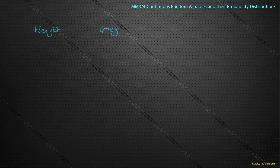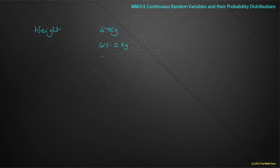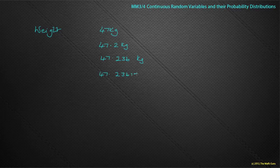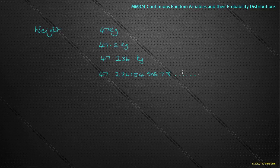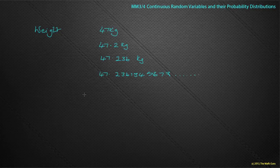On a slightly more accurate scale, you could be 47.2 kilos, or even more accurately 47.236 kilos. On some atomic scale, weight could be measured to all sorts of decimal places. Finding the probability that someone is a specific weight is actually impossible, because weight can't theoretically be measured to any fixed degree of accuracy.